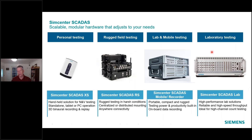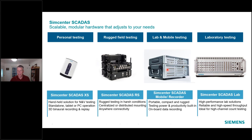The SCATUS itself is a portfolio split into four major pillars — four types of front ends or acquisition hardware. These range from personal testing with small portable units, ruggedized field testing (which is probably the area newest to most people on the call today), lab and mobile testing, and laboratory testing. What it comes down to is how many channels you need, whether you're always on AC power or need to run on battery, whether you're measuring strain gauges or accelerometers, what types of signals you want to measure — everything in between to determine the best fit for your application.